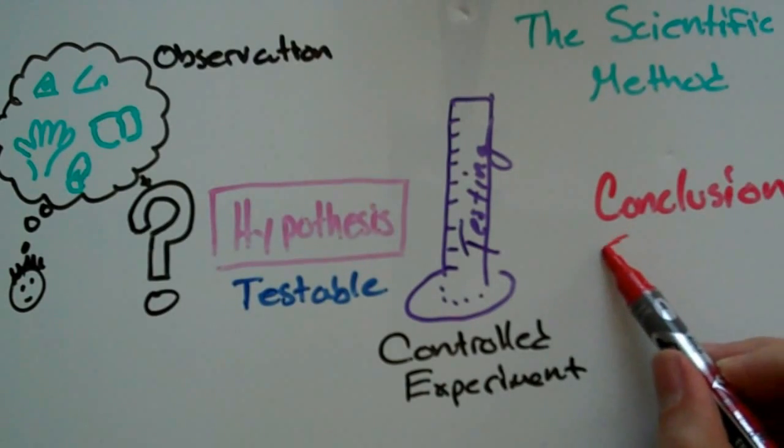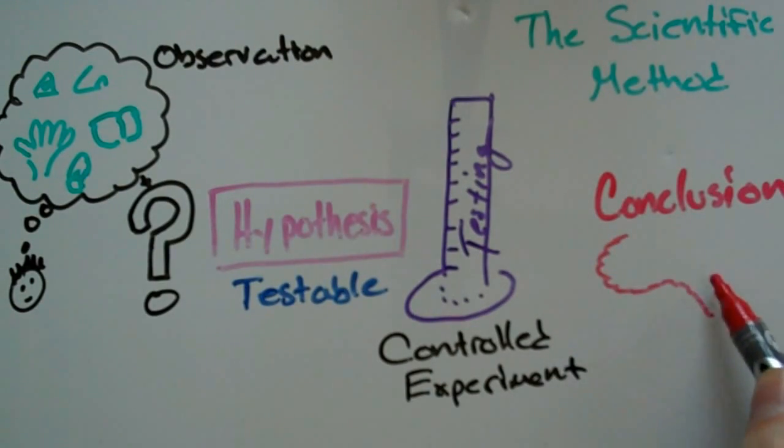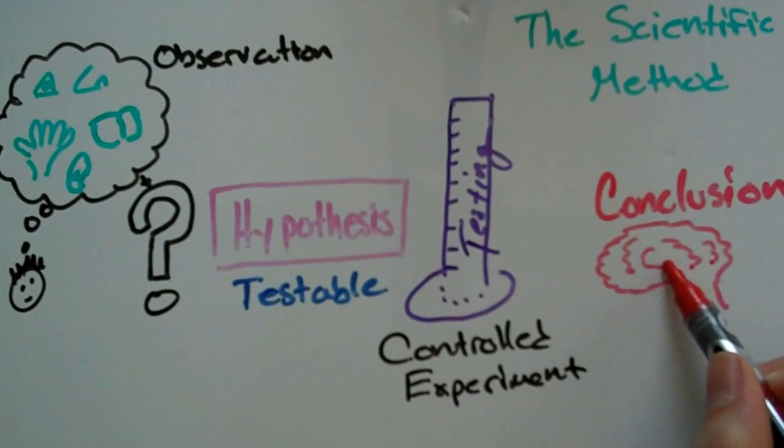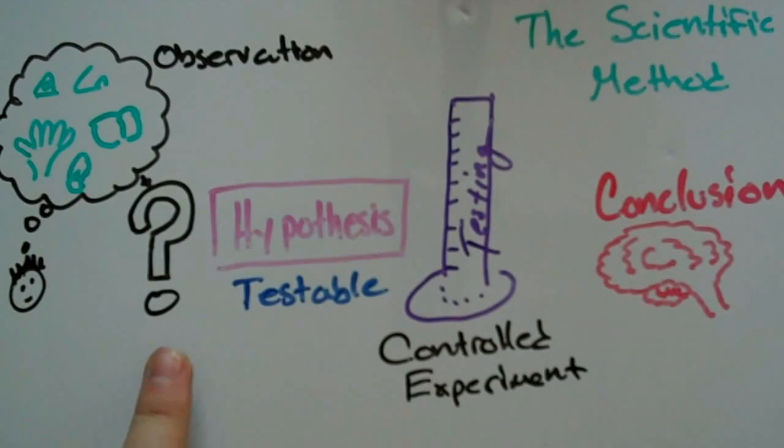You've got to use your brain and determine what's actually there as opposed to how you feel about it. So scientific method is all about observation, which leads you to question and form a testable hypothesis and control an experiment that you can then conclude about what's going on.